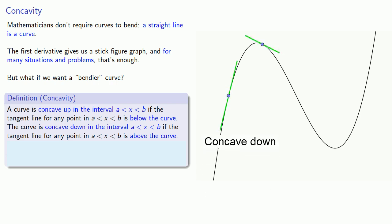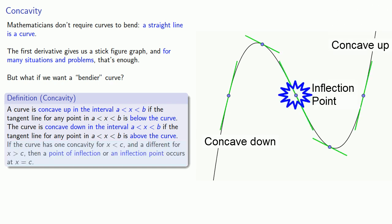If our curve has one concavity for some interval leading up to a point and a different concavity after that point, then the point itself is a point of inflection, or an inflection point.